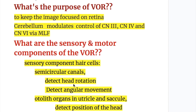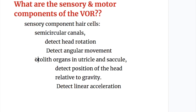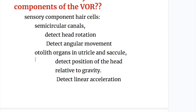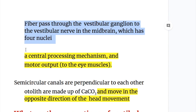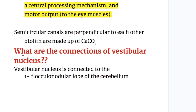The purpose of VOR is to keep the image focused on the retina. The sensory components are: first, hair cells in the semicircular canal which detect head rotation or angular movement; and second, otolith organs in the utricle and saccule which detect position of the head relative to gravity — they detect linear acceleration. Fibers pass through the vestibular ganglion to the vestibular nerve nucleus in the brainstem, which has four nuclei. Then there is central processing and motor output to the eye muscles. Semicircular canals are perpendicular to each other and otolith organs are made up of calcium carbonate.